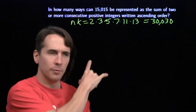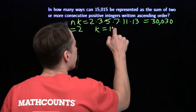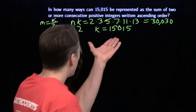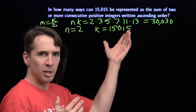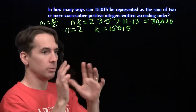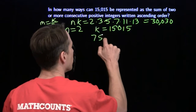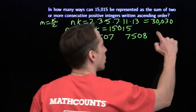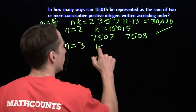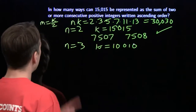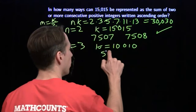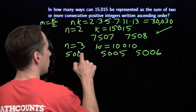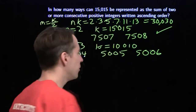Let's try a couple of examples. Try N equals 2: K is 15,015, so the middle number is 15,015 divided by 2, which is 7,507.5. That means our two numbers are 7,507 and 7,508 — add those together and we have a winner. Now try N equals 3: K is 10,010, so the middle number is 5,005. We go up one to 5,006 and down one to 5,004 — add those three together and we get 15,015. Another winner.